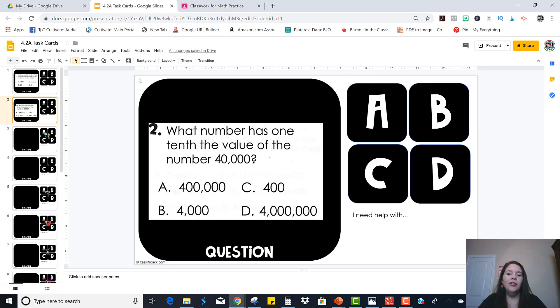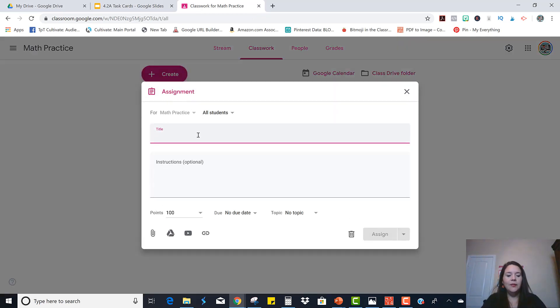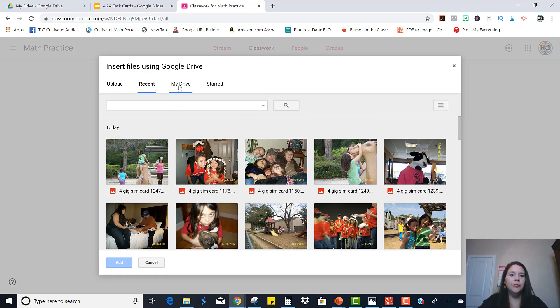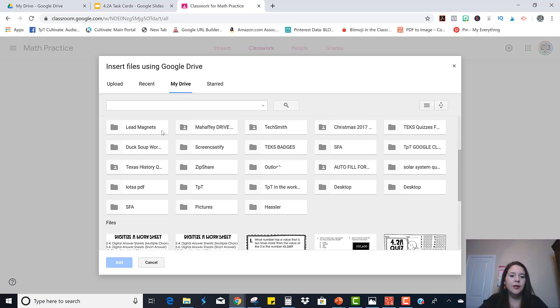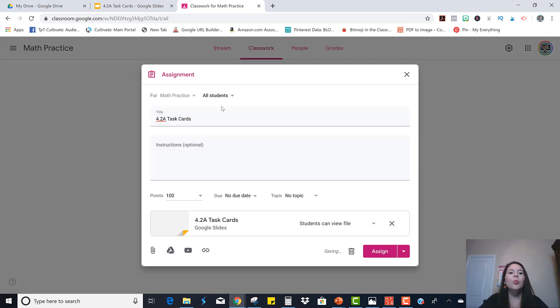Once it's completely ready to go you are going to share it right in Google Classroom. I'm going to create a new assignment and name it 4.2a Task Cards. You're going to go into your Google Drive to find it. Add it there. And then remember when you're doing these interactive activities you always want the students to have their own copy. So don't forget to make a copy for each student. That's kind of one of the most important parts. And then just click assign.